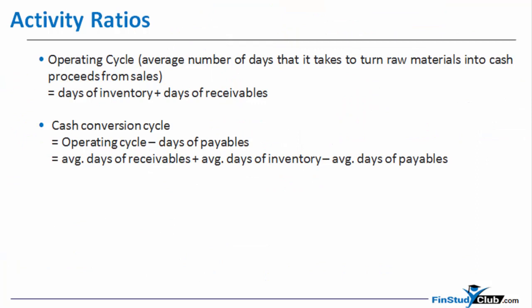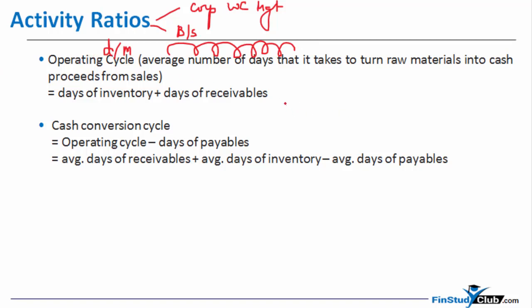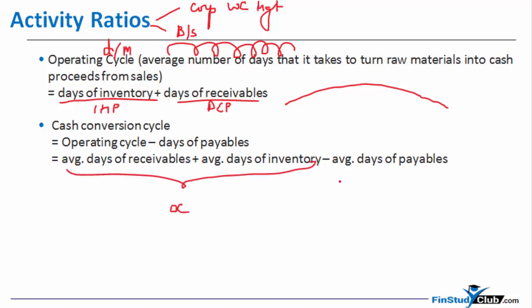Activity ratios are very closely related to the operating cycle, as the name suggests, and there is a big logical connection. These are concepts you have already covered twice — once in corporate finance working capital management, and once in balance sheet reading. The operating cycle is the number of days or months to complete one full business cycle: the inventory holding period plus the debtor collection period. The cash conversion cycle is the net operating cycle — that is, the operating cycle minus the creditor payment period.